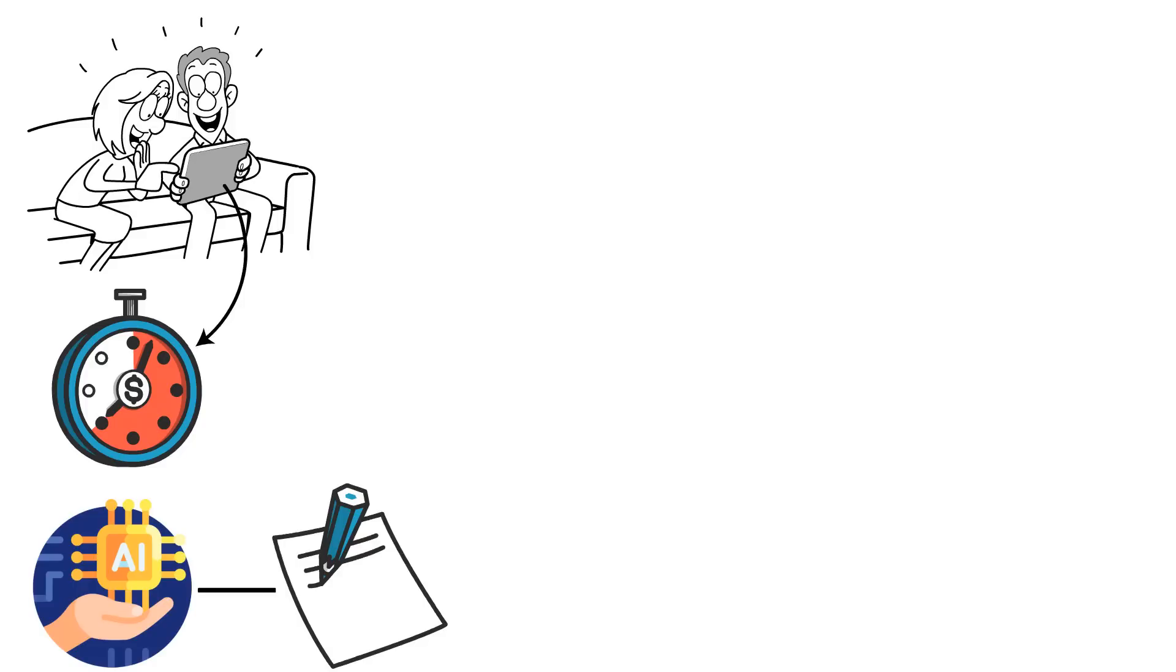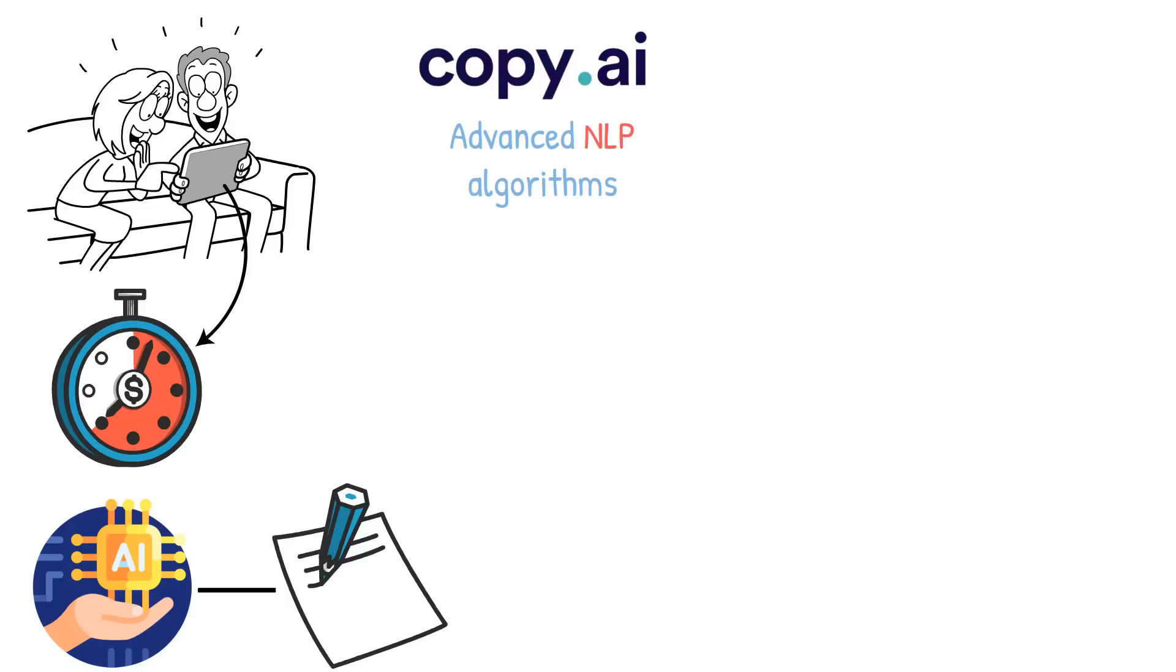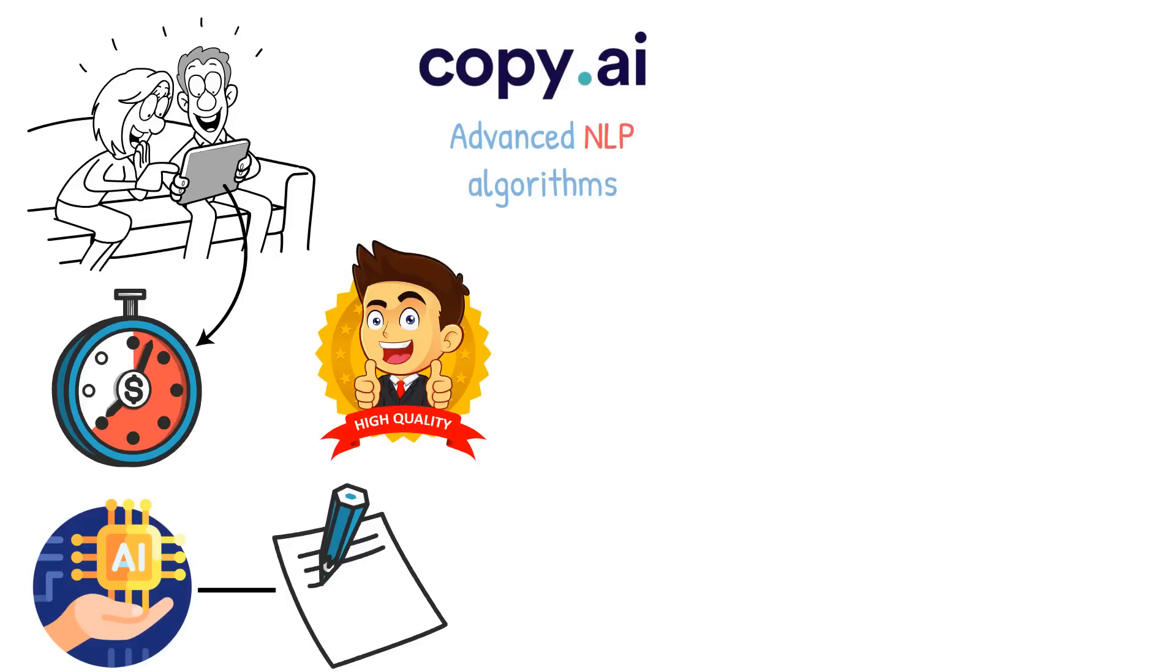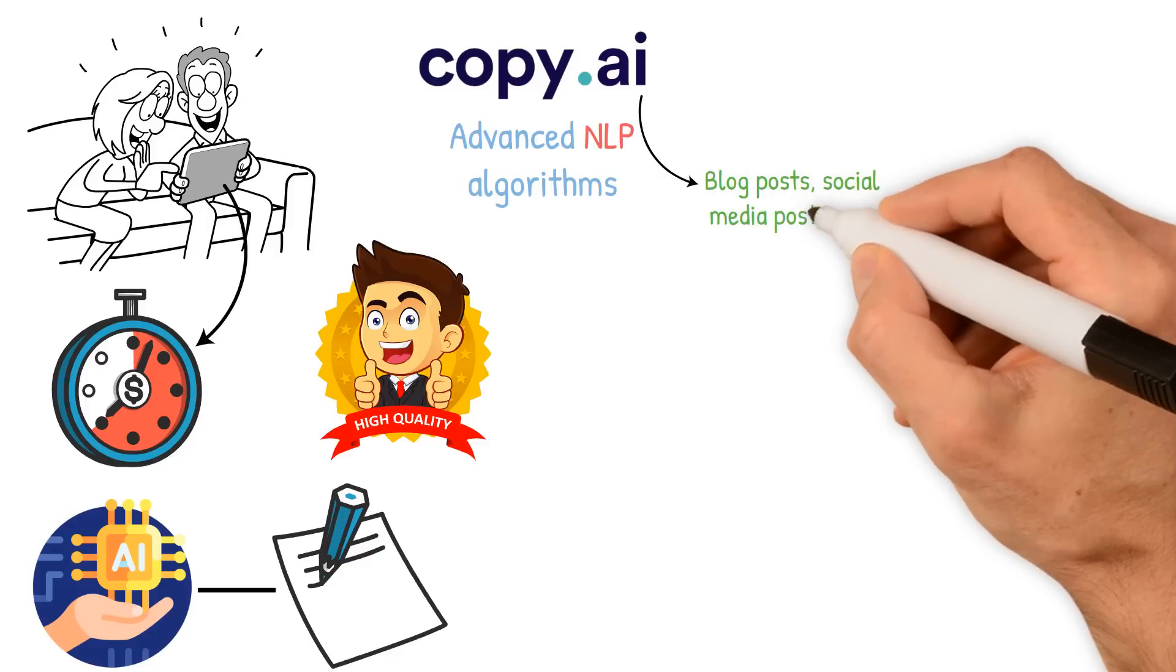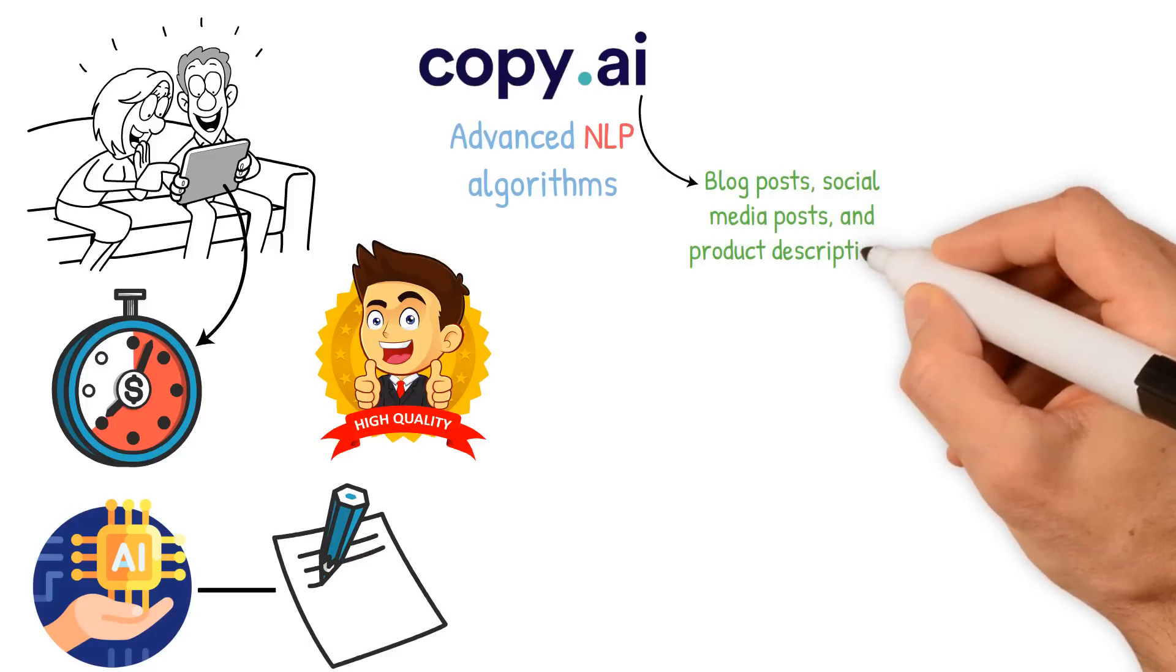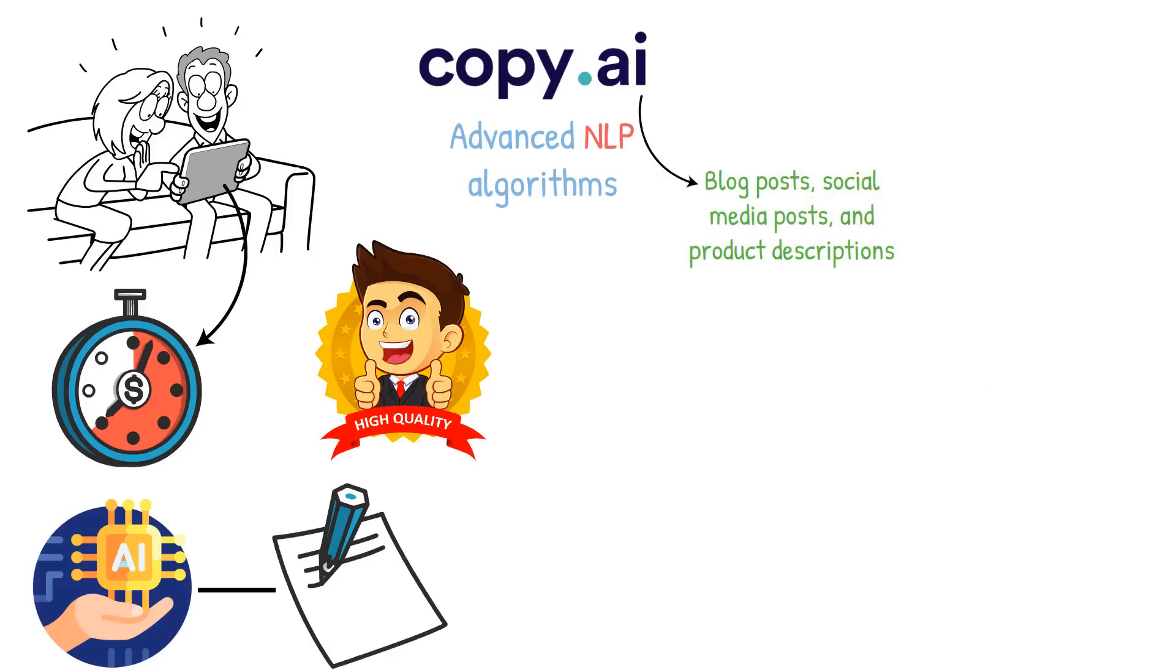One example of an AI-powered content creation tool is Copy.ai. The tool uses advanced NLP algorithms to analyze your input and generate high-quality content in seconds. It can help you create blog posts, social media posts, and product descriptions that are optimized for search engines and resonate with your target audience.